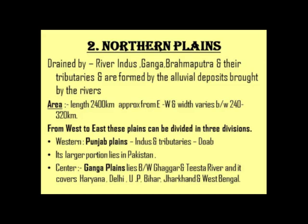Northern Plains are basically formed by three major rivers: the Indus River, Ganga River, and Brahmaputra River. When these rivers cross the mountain area, they have a lot of speed, so they carry a lot of sand, silt, and alluvial deposits. Ganga and Brahmaputra drain into the Bay of Bengal. These alluvial deposits form the Northern Plains.